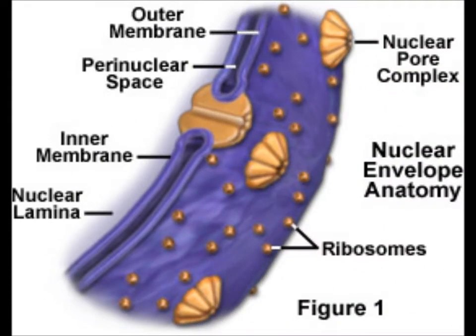The nucleus is known as the control center of the cell, because it controls eating, movement, and reproduction. Eukaryotic cells are cells which have a nucleus. The nucleus and all its contents are surrounded by the nuclear envelope, which is similar to the cell membrane, having a phospholipid bilayer. This lets RNA and proteins pass through easily while keeping the chromatin inside.